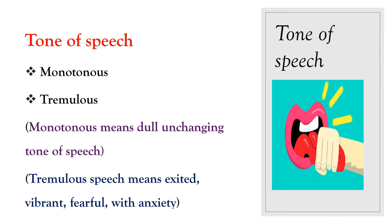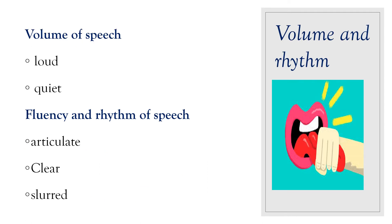Under tone of speech, check for monotonous speech — a dull, unchanging tone — or tremulous speech, meaning excited, vibrant, fearful, or anxious delivery. Under volume of speech, check for loud voice or quiet voice. Under fluency and rhythm of speech, check whether the speech is articulate and clear, or slurred.